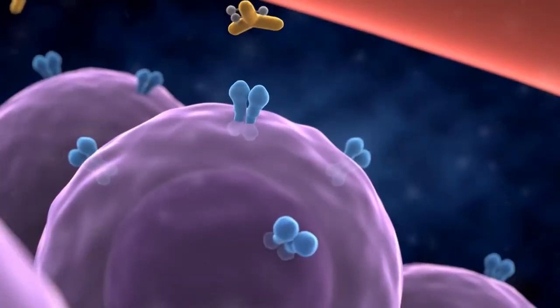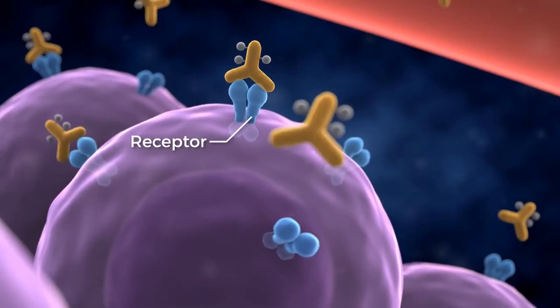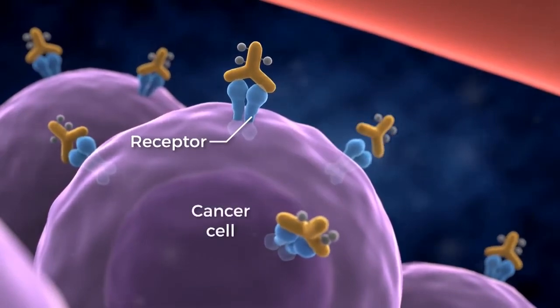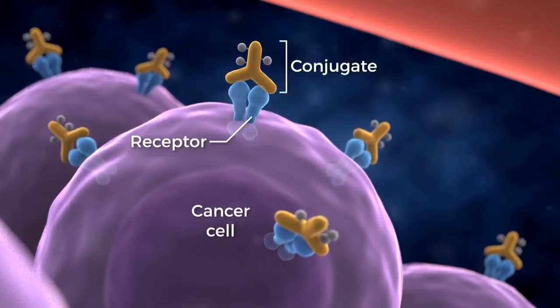The conjugate will then leak out of permeable vessels near the tumor. It will bind to special receptors on the surface of cancer cells.